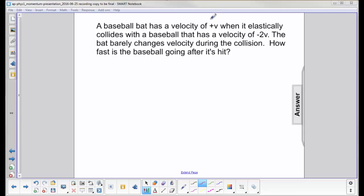A baseball bat has a velocity of plus v, we're going to call that v1, when it collides elastically with a baseball that is thrown at it with a velocity of negative 2v, and we're going to call that v2.